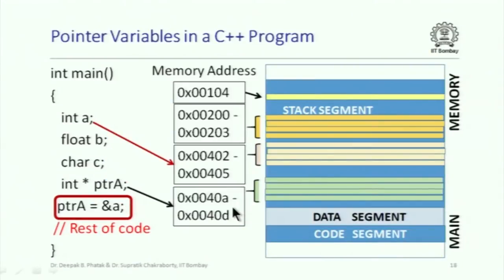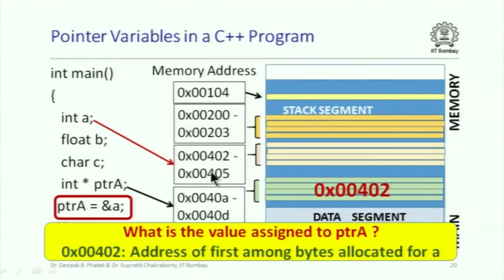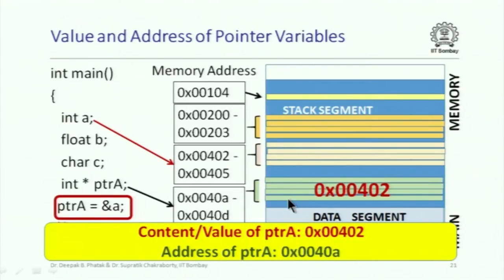When I write an assignment like ptrA = &A, I am saying: look at variable A, find out its address. Since A occupies 4 locations, the convention is to store the address of the first byte among the 4 bytes allocated for A. So hex 402 gets stored in the space allocated for ptrA. That is what ptrA = &A does: it looks at variable A, finds the address of the first byte allocated for that variable, and stores it in the space allocated for ptrA.